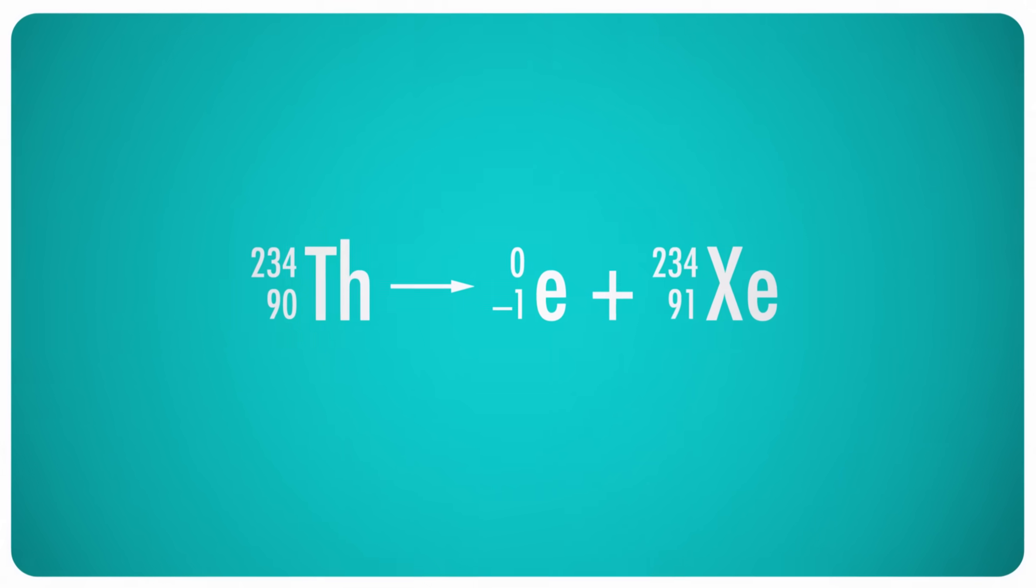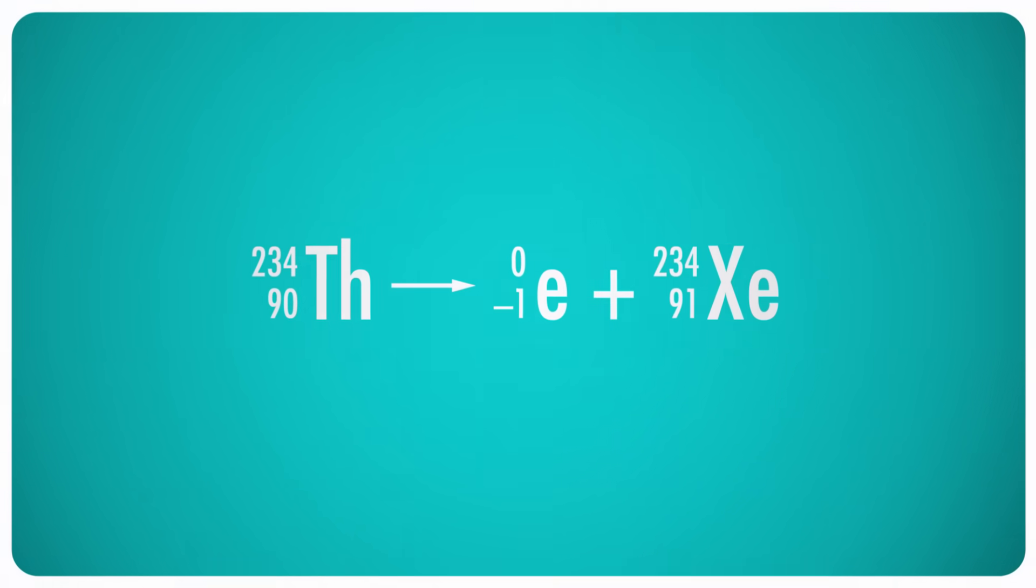Since it's an electron and not a proton, we put a negative one for the atomic number. That probably seems a little bit weird right now, but next week when we talk about nuclear equations, you will see why it is useful.